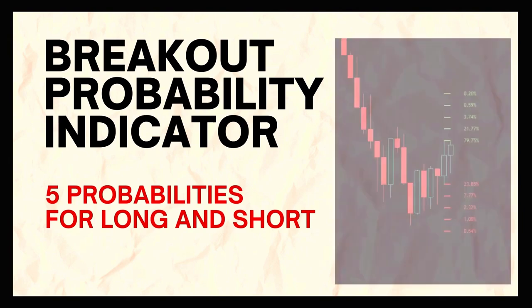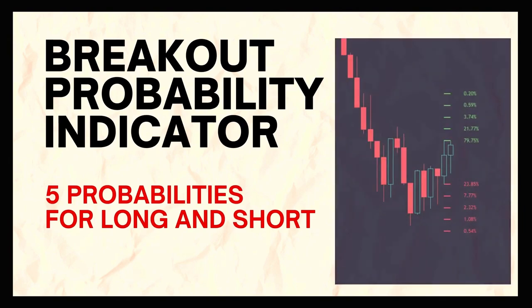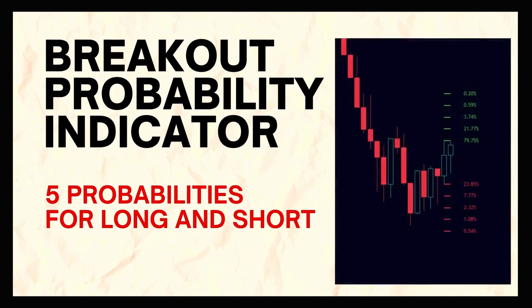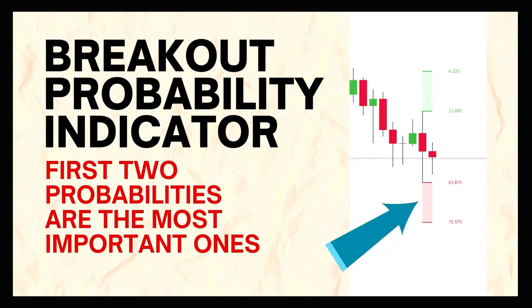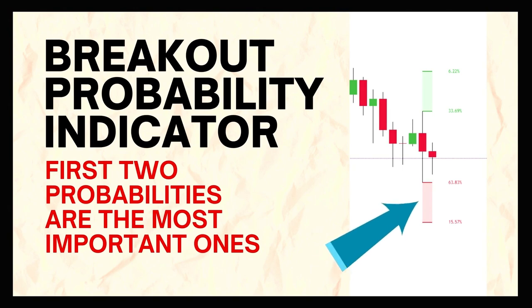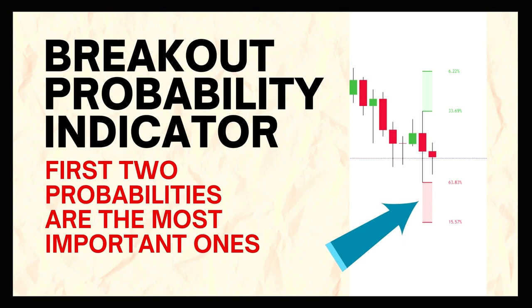These probabilities are expressed in five steps — five steps for long and five steps for short — though you can manage the number of steps in the indicator's settings. I find the first two steps most useful. I add the two long probabilities together to see how strong they are compared to the number I get by adding the two short probabilities. That gives me an extra layer of confidence before placing a trade following this indicator.